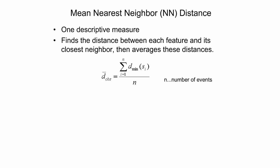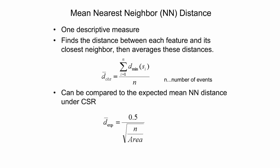One of the simplest measures that considers neighborhood relationships is the mean nearest-neighbor distance. The nearest-neighbor distance for an event in a point pattern is the distance from that event to the nearest other event in that point pattern. The average of this distance over all events gives the mean nearest-neighbor distance, which can then be compared to the expected mean nearest-neighbor distance under complete spatial randomness to indicate the tendency towards clustering or dispersion.